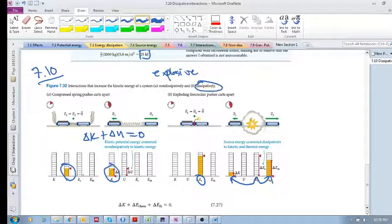So if we look at this in terms of the equation, we have delta K plus delta E chemical, which is your source energy, plus delta E thermal. This would be a positive delta, that would be a negative delta, and that would be a positive delta, and all of these need to add up to zero.